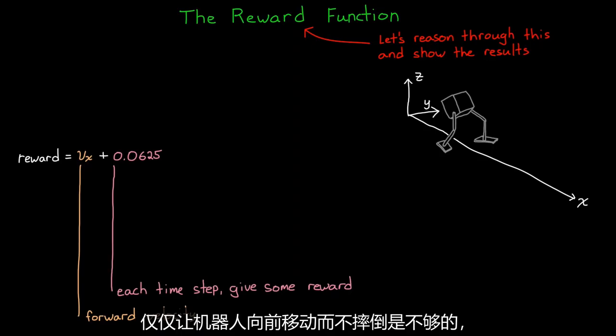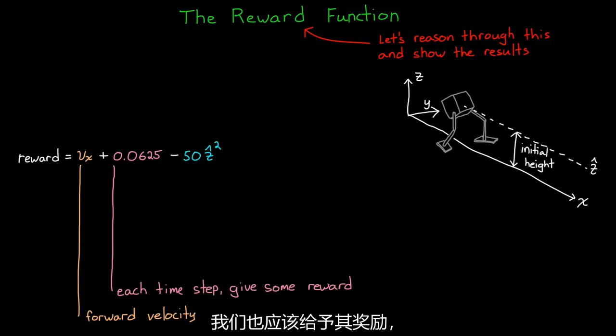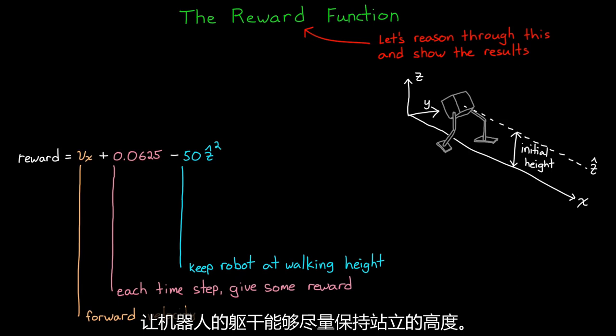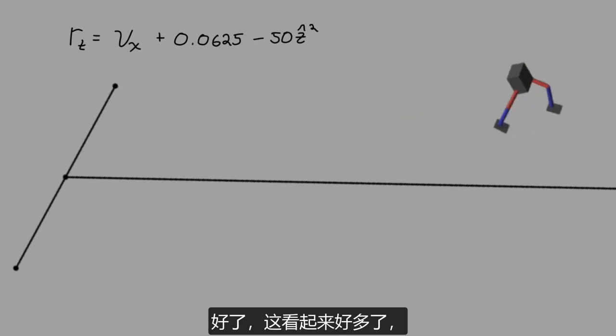So it's not enough that the robot moves forward and doesn't fall, we want some semblance of walking instead of hopping or crouch walking. So to fix this, we should also reward the agent for keeping the body as close to a standing height as possible. Let's check out this reward function.